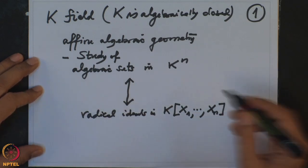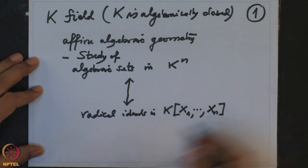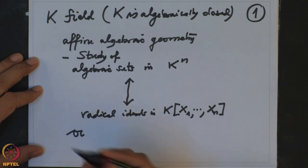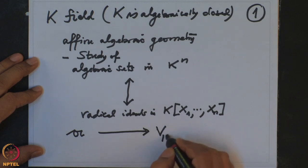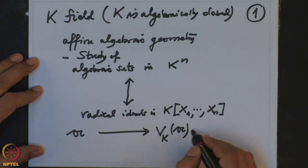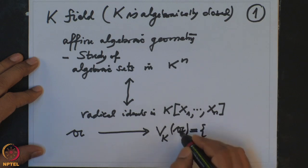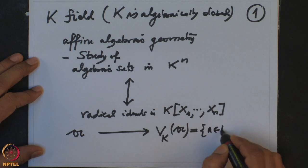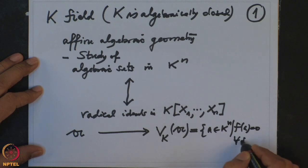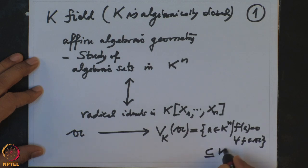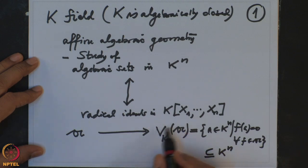The correspondence is: if you have a radical ideal A, we define V_K(A) as all the common zeros of all the polynomials in A — that is, all points in K^N such that F(a) = 0 for all F in A. This is a subset of K^N, and these sets are precisely the closed sets of a Zariski topology on K^N.